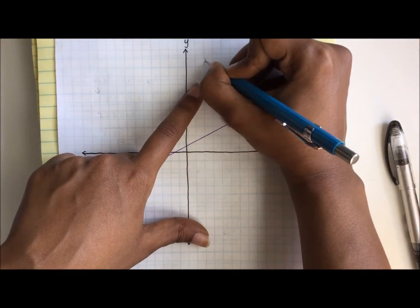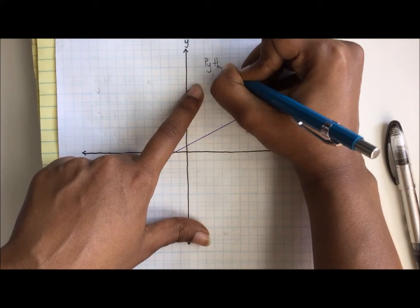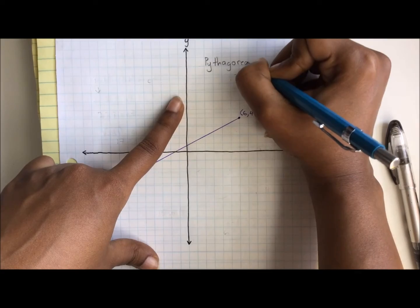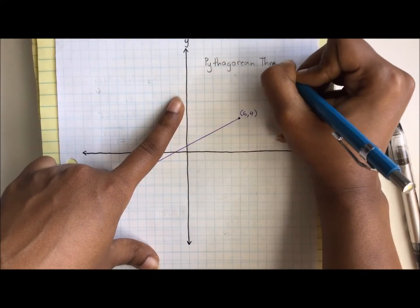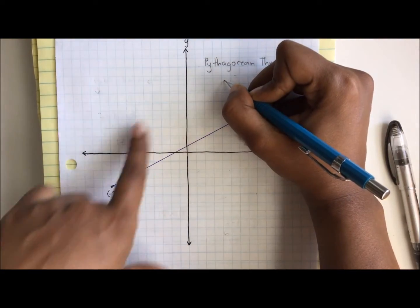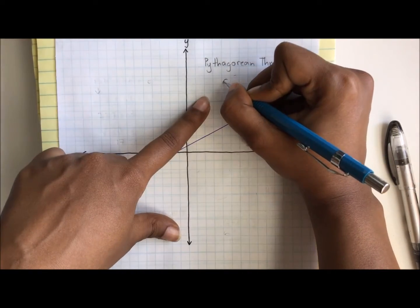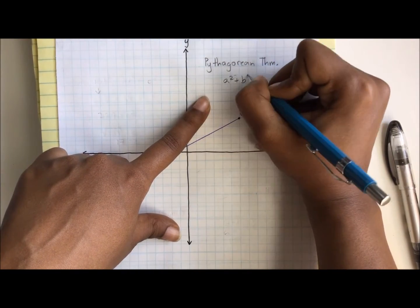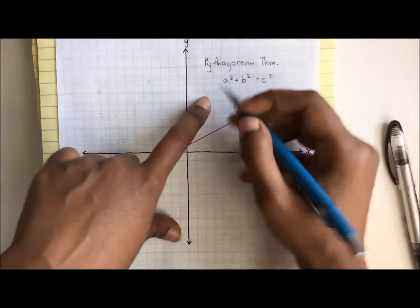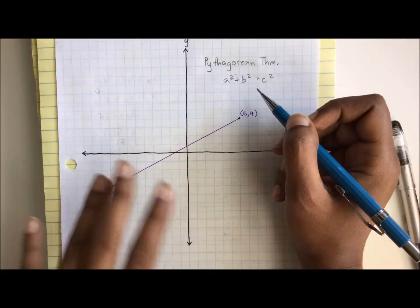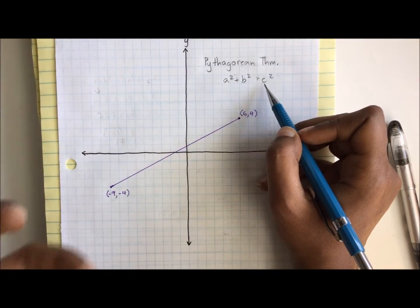Let's write that down. We know we're going to be constructing a right triangle soon, and we're going to be using the Pythagorean theorem to help us figure out the distance between these two points. The Pythagorean theorem is a squared plus b squared equals c squared. a and b are the legs, or the future legs of this future right triangle, and c squared is always the hypotenuse, the side opposite of the right angle.